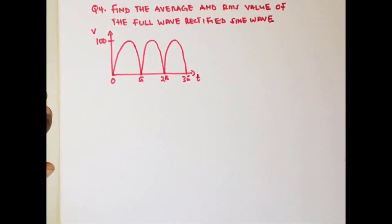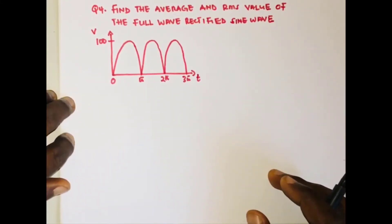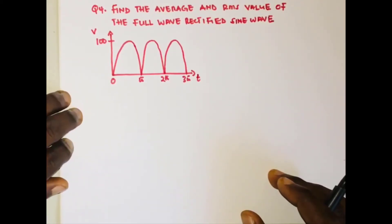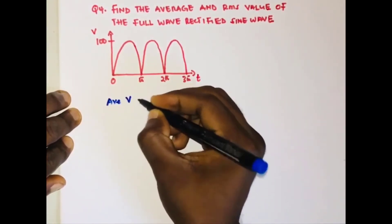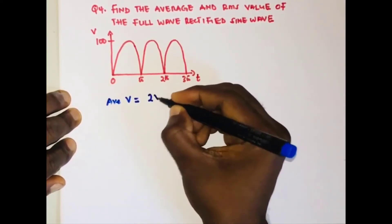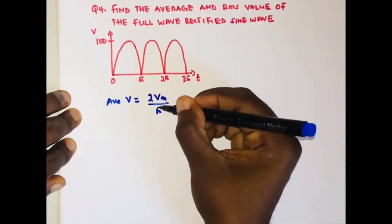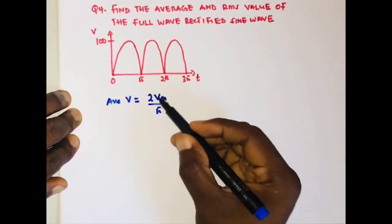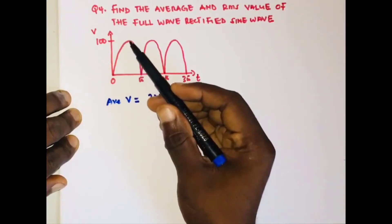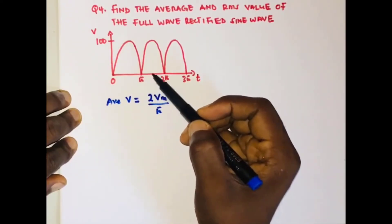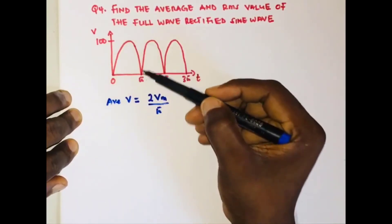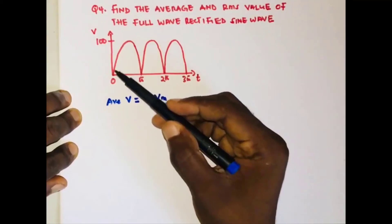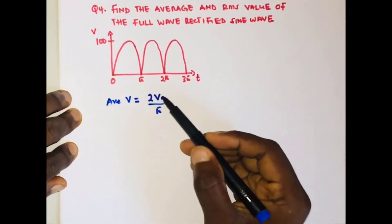After finding the RMS and average values of a half-wave rectified sine wave, how do we calculate them for a full-wave rectified sine wave? For this waveform, the average value is simply twice the peak value divided by π. For the half-wave we had the amplitude divided by π because only the positive half cycle was present. For the full-wave rectified sine wave, we have two positive half cycles, so it's two times the peak value divided by π.